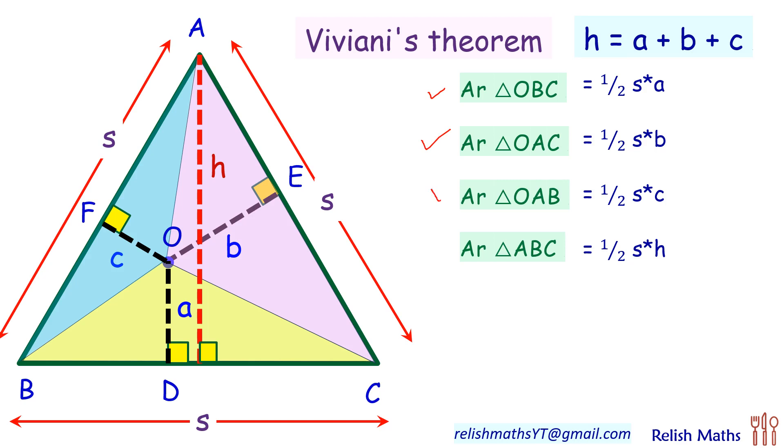Now we know that this full triangle ABC, the area of this full triangle ABC is equal to sum of areas of OBC, OAC, and OAB. So we'll equate it. We'll say ½ × s × h equals ½ × s × a plus ½ × s × b plus ½ × s × c. In this we'll take ½ × s as common. Now both sides ½ and s will get cancelled, so we'll get h equals a plus b plus c, and that's what is Viviani's theorem.